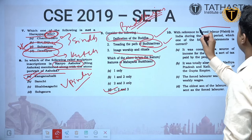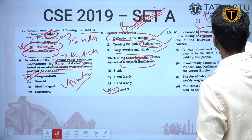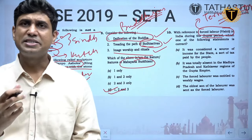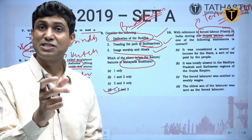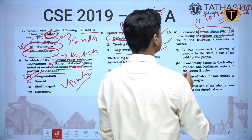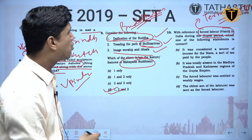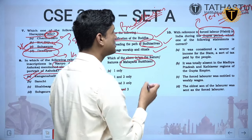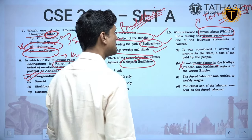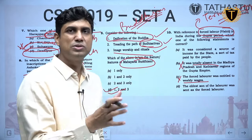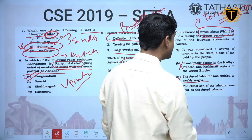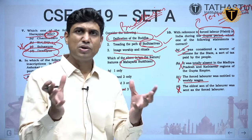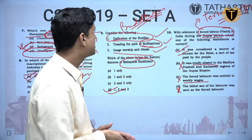With reference to forced labor — that is Visti — during the Gupta period: it was not totally absent, and there were no weekly wages since it was forced labor. The eldest son being sent as forced labor has no basis. The only correct option is that Visti was a source of income for the state — it was a sort of tax paid by the people to the state. So the answer is option A.